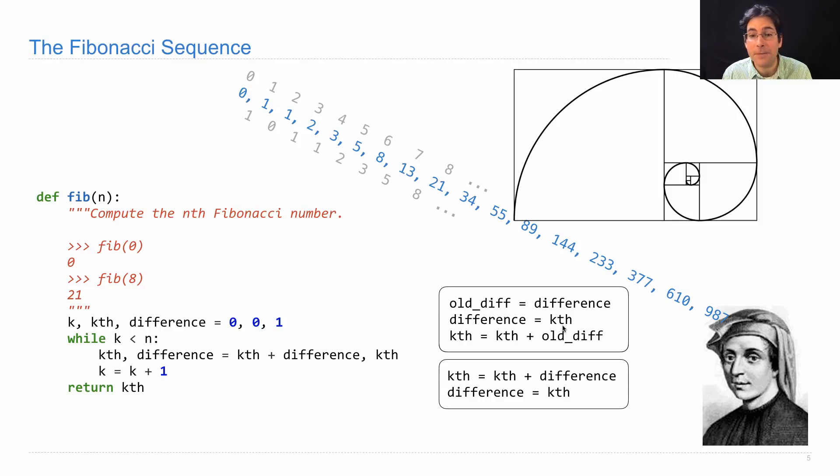Then we can go ahead and change difference to something new. And we still have all the information we need to compute the next Fibonacci number, which is the current Fibonacci number plus the difference that we had already computed. Here's a version that works just as well as our one-liner, but takes three lines and an additional name. That's one reason why multiple assignment can be particularly convenient.